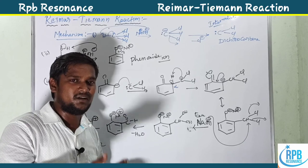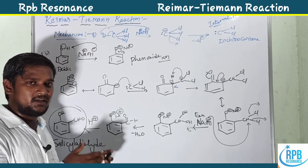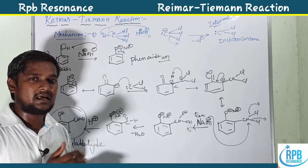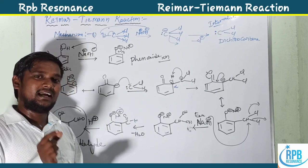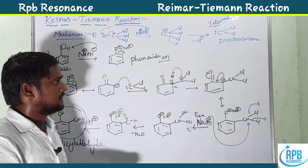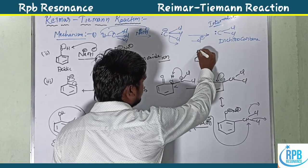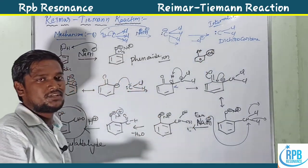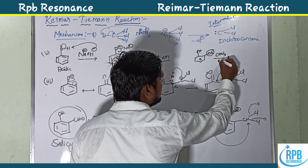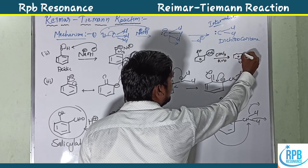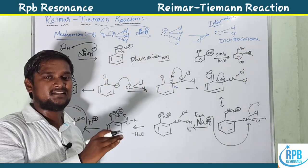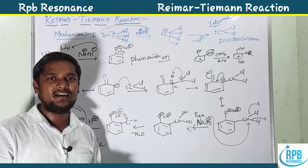In the next video, we will discuss applications of the Reimer-Tiemann reaction, the heterocyclic Reimer-Tiemann reaction, exceptional and abnormal products, and the selectivity of the reaction — for example, when one ortho position is blocked by a substituent, the para product becomes the major product. These topics will be covered in the next video. Thank you for watching.